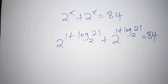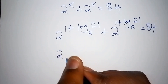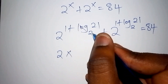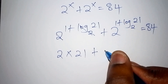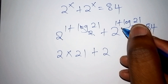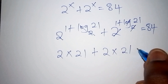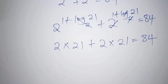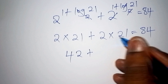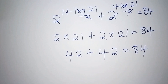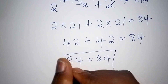Checking: 2 to the power of 1 is 2, and the log base 2 of 21 in the exponent means the base-2 and the log base 2 cancel, leaving us with 2 multiplied by 21 equals 42. So we have 42 plus 42, which equals 84. Our answer is confirmed correct.